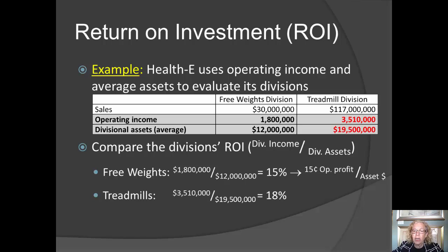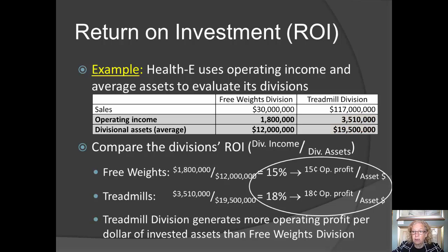For the treadmill division, we find that it generates 18% ROI — in other words, 18 cents of operating profit per dollar of invested assets. Therefore, we can conclude that the treadmill division is better at generating operating profit per dollar of invested assets than the free weights division.